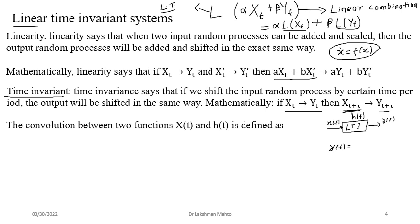The output Y(t) is the convolution of X(t) and H(t), which we denote as X(t) * H(t). Convolution in general is represented as the integral from minus infinity to infinity of X(tau) times H(t minus tau) d-tau. This is the standard form for computing the output of a linear time invariant system.